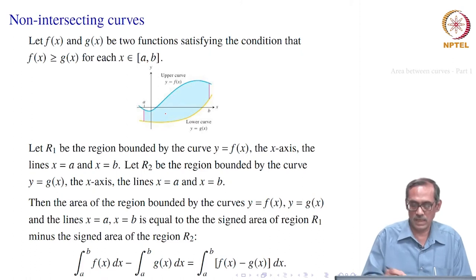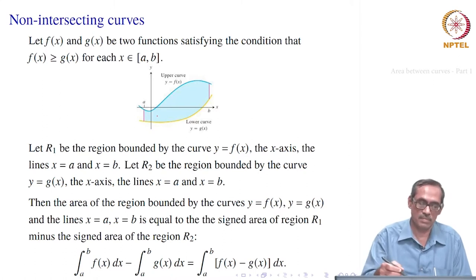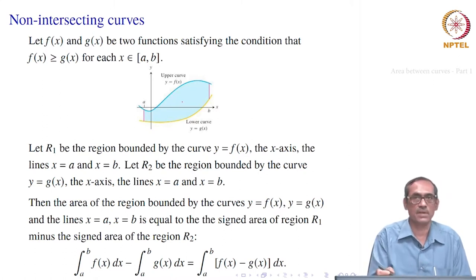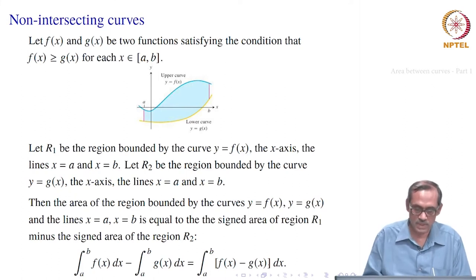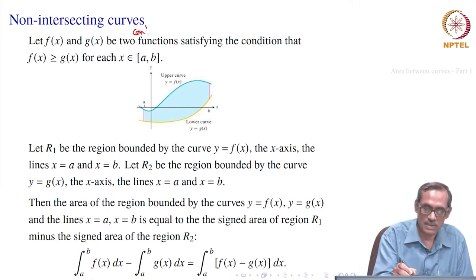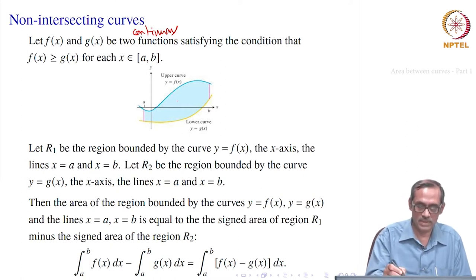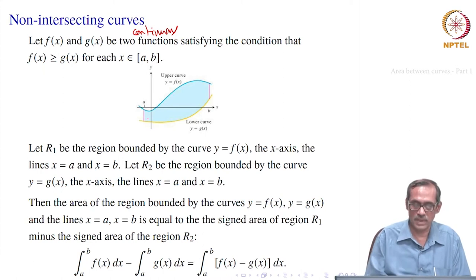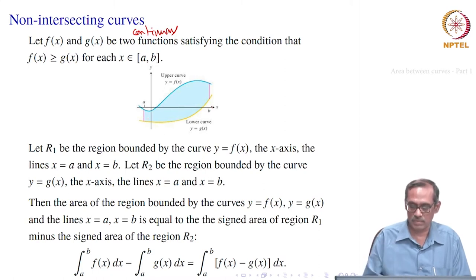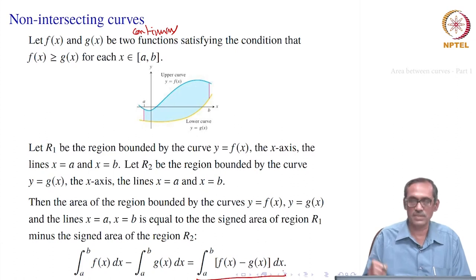We will be using this in many examples, checking how one curve lies above the other. If f(x) ≥ g(x) for each x in [a, b] and both functions are continuous — so that integrability is satisfied — then the area bounded by those two curves and the lines x = a and x = b is the integral from a to b of [f(x) − g(x)] dx.